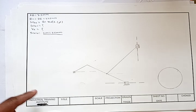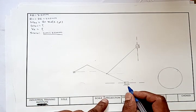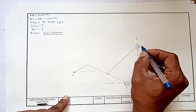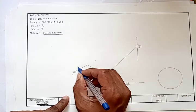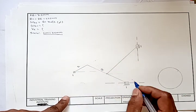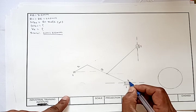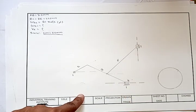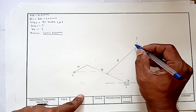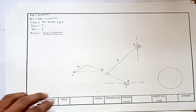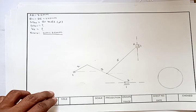Now the next step is to number the links. We will start numbering the links from the fixed link: link number 1, crank as link number 2, this link number 3, this slider as link number 4, this as link number 5, and this slider as link number 6. So there are 6 links in total.